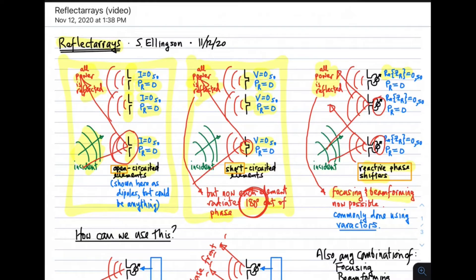These reactive phase shifters are commonly — though not always — implemented using varactors. A varactor is a diode that has capacitance proportional to a control voltage. Specifically, the capacitance of that diode depends on the bias voltage, and in this way you can control the reactance of that diode.